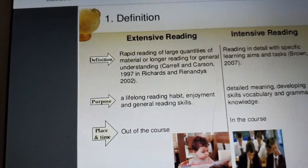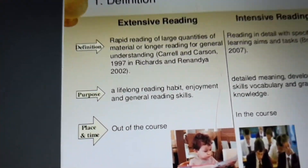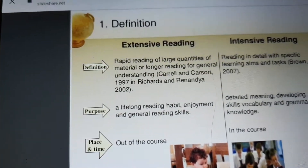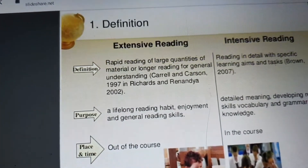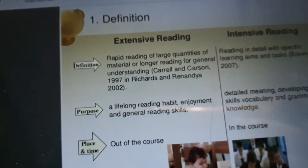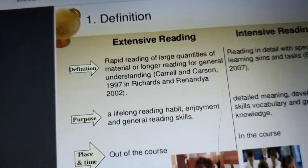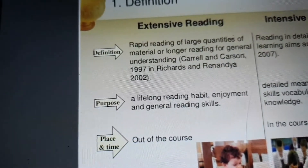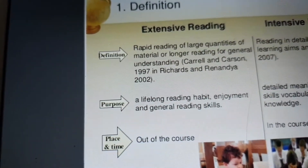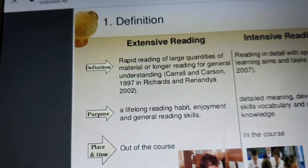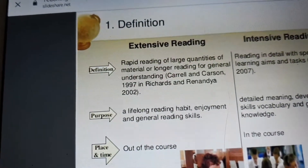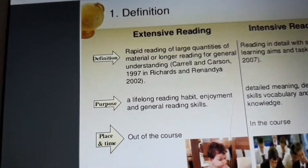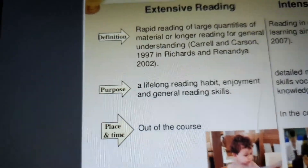Extensive reading means reading done outside of your course — not assigned by your instructor — but done in a general way, based on your own wish and interest. When you read something on your own will or for the sake of your own interest, you call it extensive reading. It involves rapid reading of large quantities of material, or longer reading for general understanding.